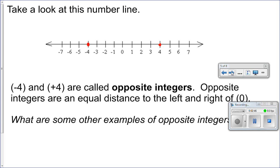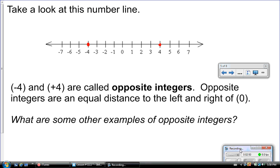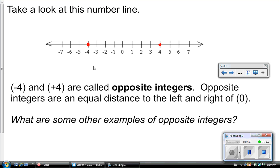Take a look at this number line. Negative 4 and positive 4, which have been marked in red, are called opposite integers. Opposite integers are an equal distance to the left and right of 0. Pause this video and think of some of your own examples of opposite integers.